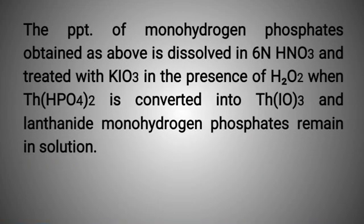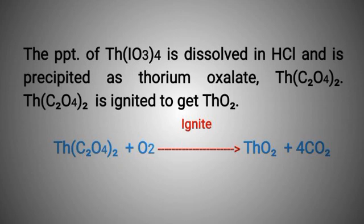The precipitate of monohydrogen phosphates obtained as above is dissolved in nitric acid and treated with potassium iodate in the presence of hydrogen peroxide. Thorium hydrogen phosphate is converted into thorium iodate, and lanthanide monohydrogen phosphates remain in solution. The precipitate of thorium iodate is dissolved in HCl and is precipitated as thorium oxalate. Thorium oxalate is ignited to get thorium dioxide: thorium oxalate plus oxygen react and give thorium dioxide plus carbon dioxide.